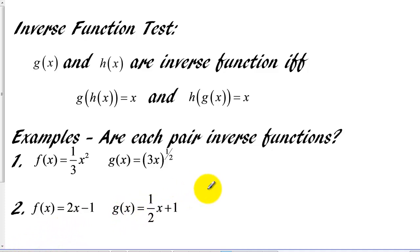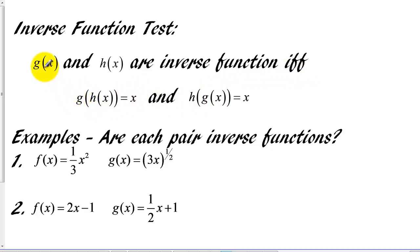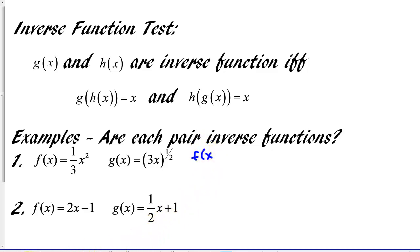There are two skills we'll use with inverse functions. The first is testing whether two functions are inverses of each other, and the second is finding the inverse of a known function. Two functions g of x and h of x are inverse functions if and only if both composites hold: g of h of x equals x, and h of g of x equals x. Both conditions must be true — the composites must give exactly x.